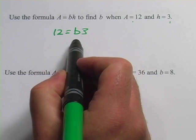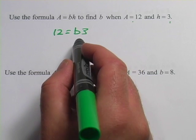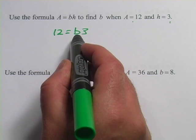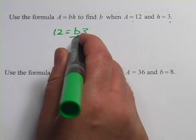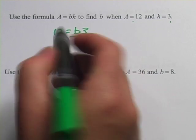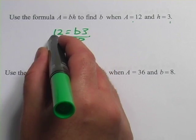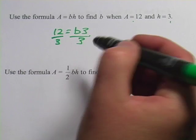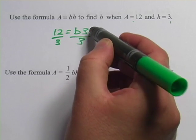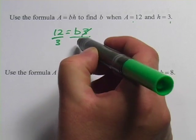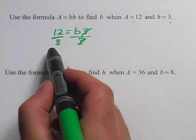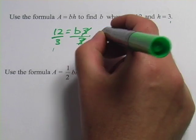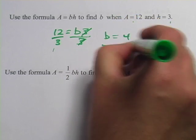To solve for b, we want to get b alone, so we have to get rid of that 3. The 3 is multiplied to the b, so we'll do the opposite to undo that. We'll divide by 3, but we have to do it to both sides because those are the rules in algebra. When we divide this side by 3, the 3s cancel, leaving b alone, which is just what we want. And on this side, we have 12 divided by 3, which is 4. So b equals 4.